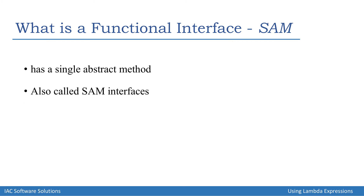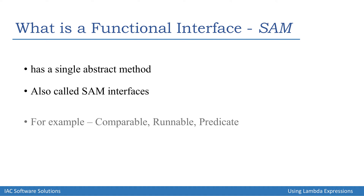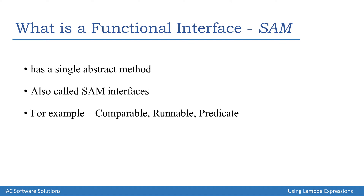Prior to Java 8, functional interfaces were also known as SAM types — Single Abstract Method interfaces — obviously because they have only one abstract method. In Java we have many functional interfaces like Comparable, Runnable, and Predicate. Of course we can define our own as well; we just have to include one abstract method in an interface for it to be called a functional interface.